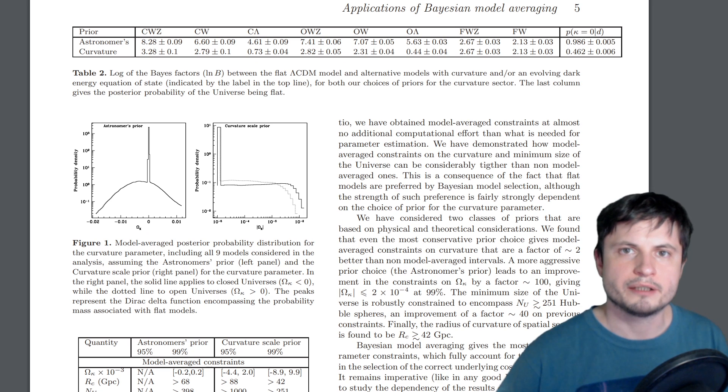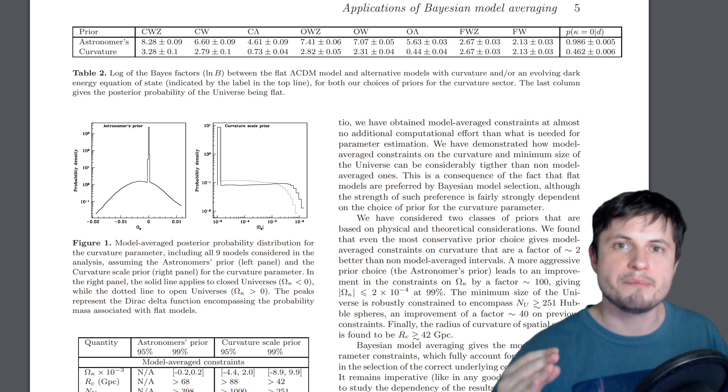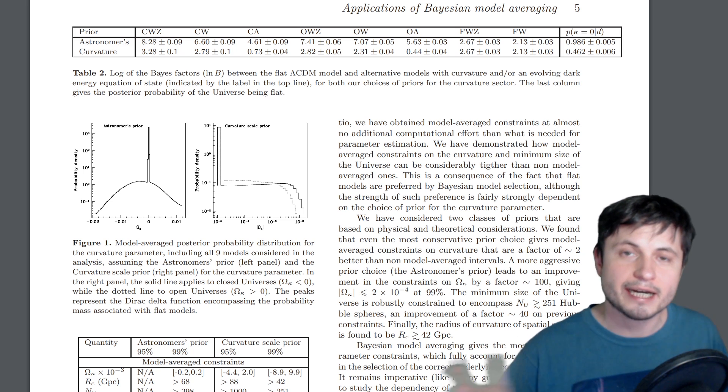So basically, in the paper that you can find in the description below, the scientists decided to do just that. They made an assumption that based on the best calculations available to us, the curvature mistake was about 1%. And so if it is 1%, what is the minimal size of the entire universe?